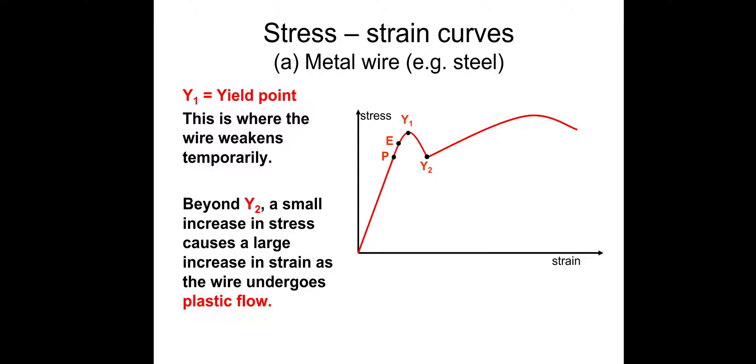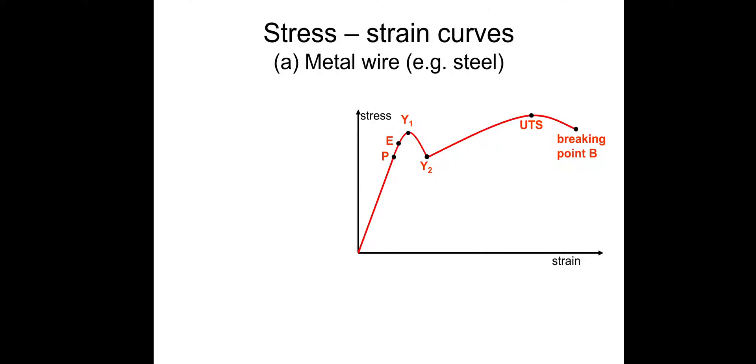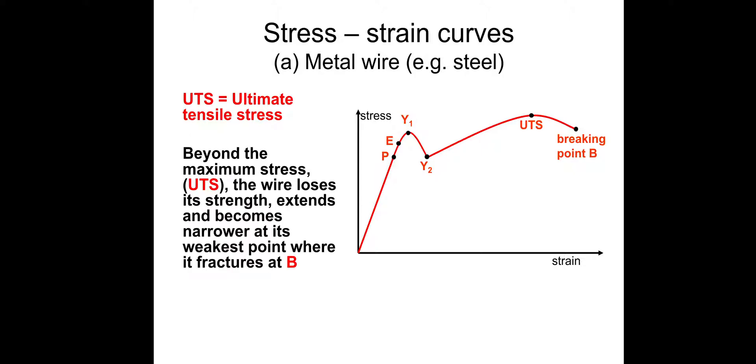Strain is, stress is force over area. So applying a little extra force causes large increases in strain, which is the extension over the original length. UTS is the ultimate tensile stress. Obviously, the word ultimate just means final. So beyond the maximum stress, the wire loses its strength, extends, becomes narrower at its weakest point, and then it will fracture. Again, this UTS and breaking point are exaggerated. So you could get a graph that looks like that instead.